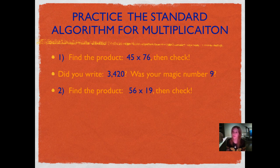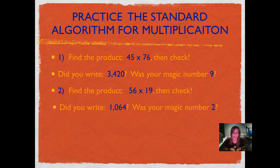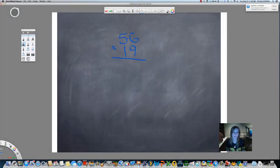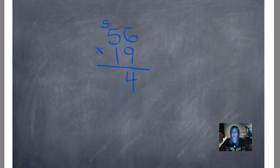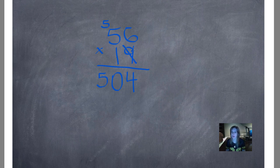Number 2: Find the product 56 times 19, then check using digital root. Go ahead and pause while you work it out and push play when you're ready. Did you write 1,064? Was your magic number 2? Let's see how we did it. We're going to start again multiplying by the number in the ones place. So 9 times 6 is 54. 9 times 5 is 45, plus 5 is 50. If 9's are hard for you when multiplying, write down in your journal that you want me to teach you the 9's trick tomorrow — it's really cool. Now we're done multiplying by our 9. X and O right below it, and kisses to go.